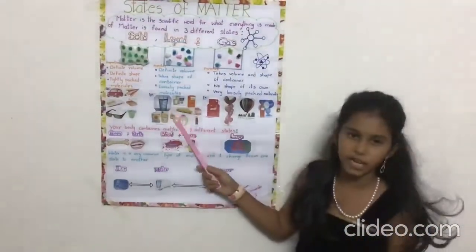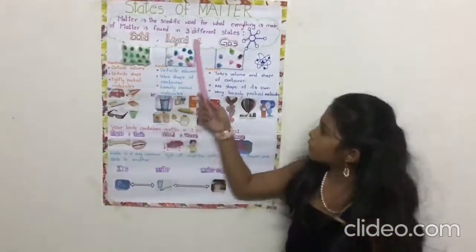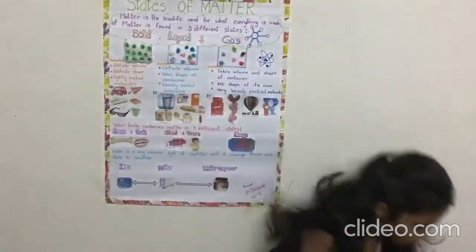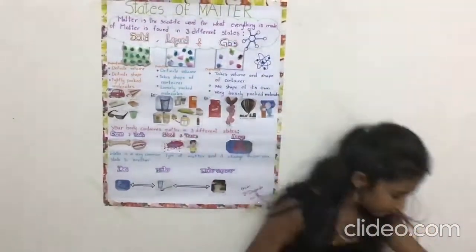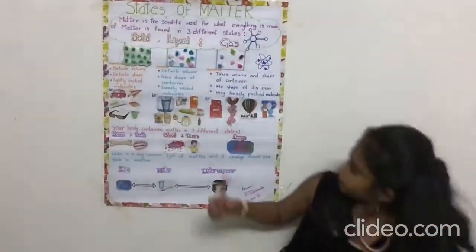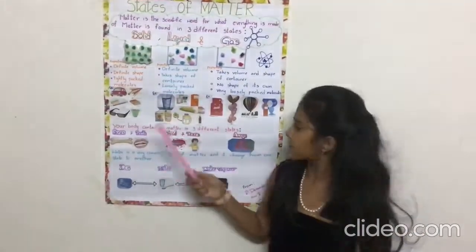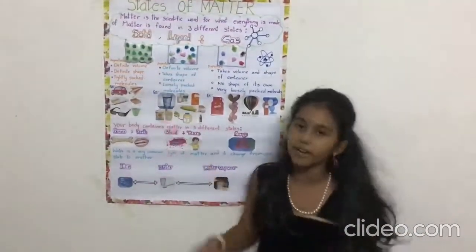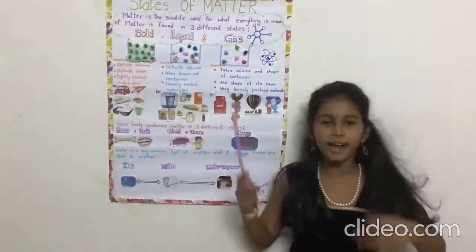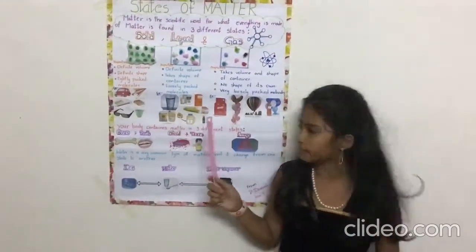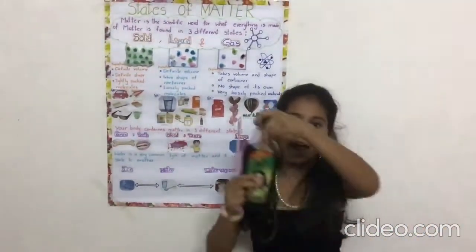Now I am going to tell you some examples for liquid, such as water, milk, juice, sunflower oil, corn oil, groundnut oil, cool drink, and hair oil.